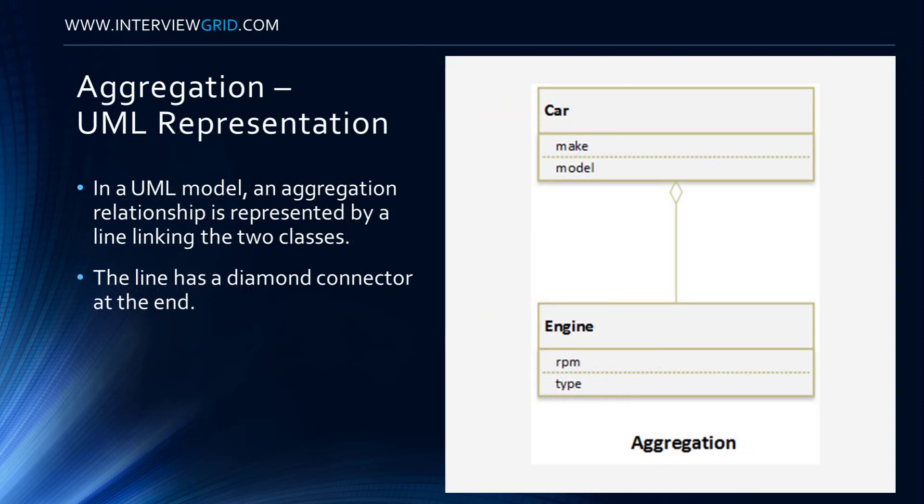In a UML model, an aggregation relationship is represented by a line linking the two classes. The line has a diamond connector at the end.